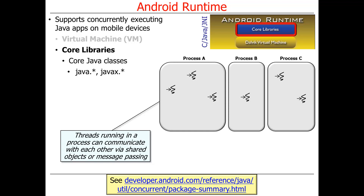If you're talking between threads in different processes on the same machine, something called inter-process communication is used — another form of message passing to move information across process boundaries. We'll also talk about ways to communicate between a process on your Android device and a process that might run out in the cloud, like on a server, or on your laptop when running the device in emulator mode. Those also use message passing communications.